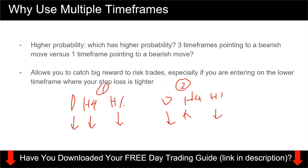Another reason to use multiple timeframes is that it allows you to catch big reward-to-risk trades, because you can fine-tune your entry. You can enter on a lower timeframe where your stop loss is tighter. For example, if you're trading the daily chart, the range tends to be very wide. If you drill down to the H4, you can have a tighter stop loss based on the H4 chart, and if price moves in your direction, you'll capture a better reward-to-risk trade.